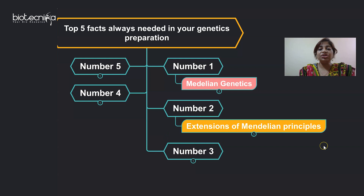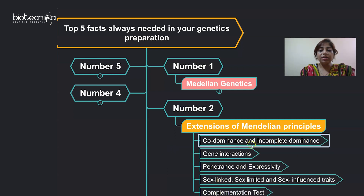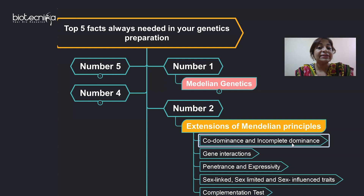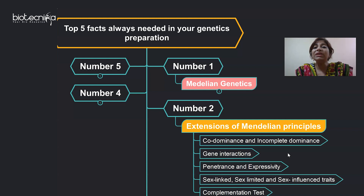Number two will be the extensions of Mendelian principles. Once you have understood Mendelian genetics, you also have to understand the deviations from Mendelian principles. This comprises all the concepts Mendel never came across or explained — but which exist in nature. It may include co-dominance and incomplete dominance, where alleles of a gene are not only dominant and recessive. Then there is gene interaction, where two genes interact with each other, influencing each other's expression — one masking another — which is epistasis, and how that modifies the dihybrid ratio.